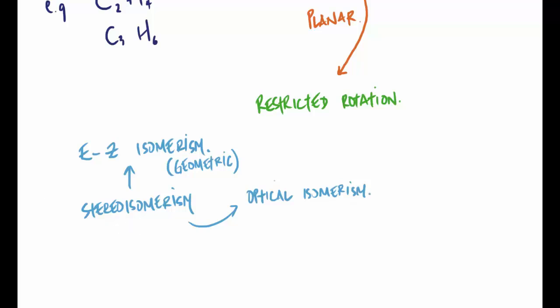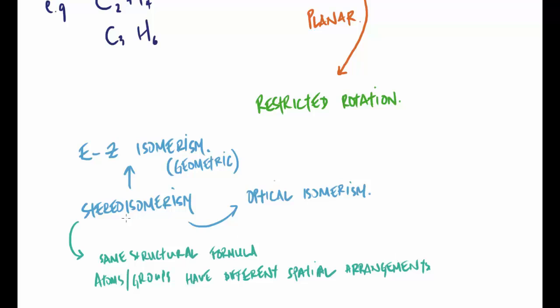So stereoisomerism, well what is stereoisomerism? Stereoisomerism is isomerism which forms when molecules have the same structural formula but the atoms or groups attached have different spatial arrangements. The groups attached are arranged differently in space and that's what stereoisomerism is. This definition has been asked in exam papers.